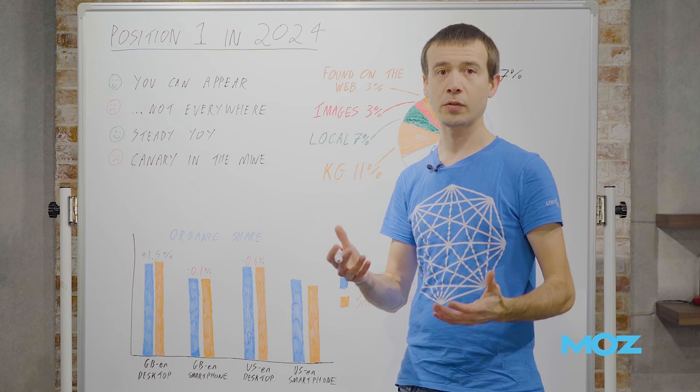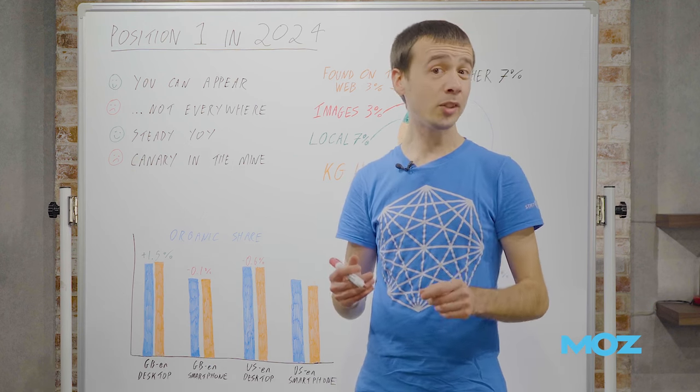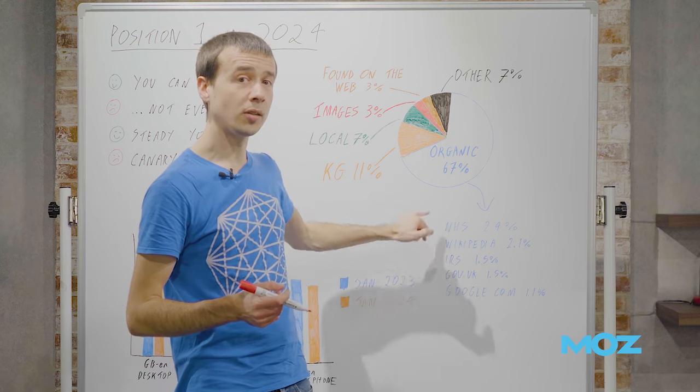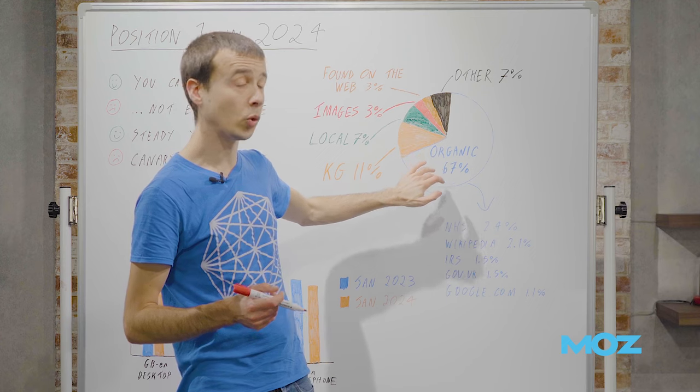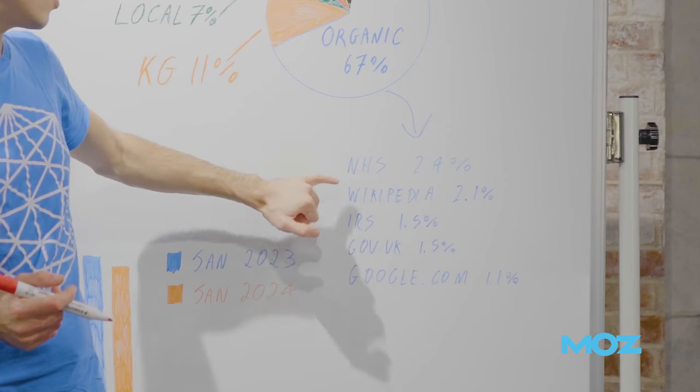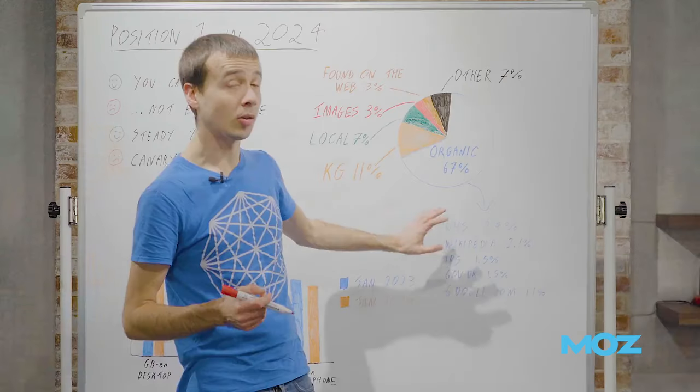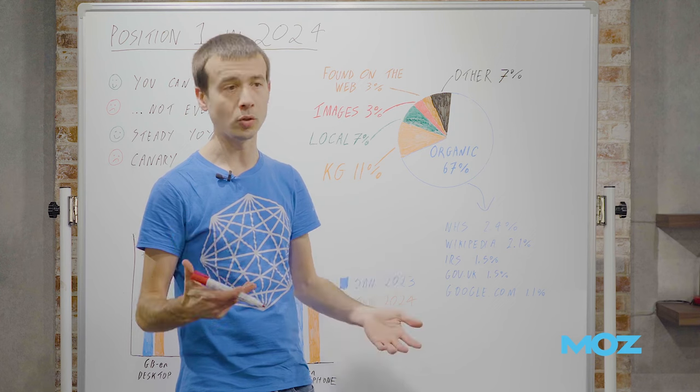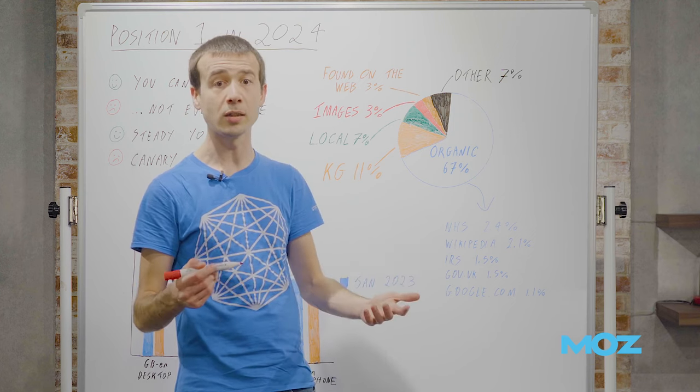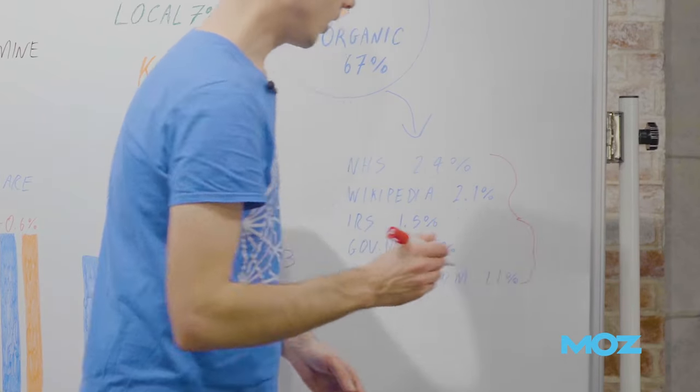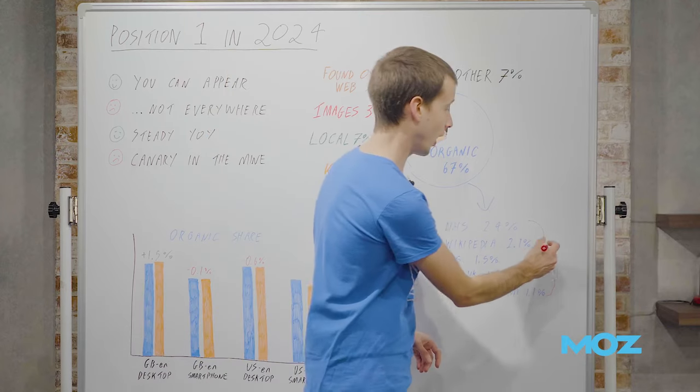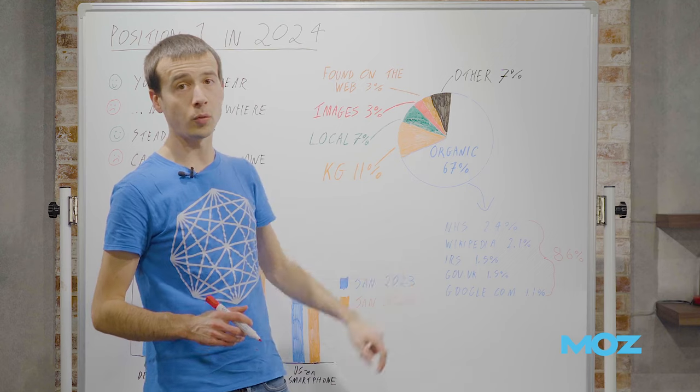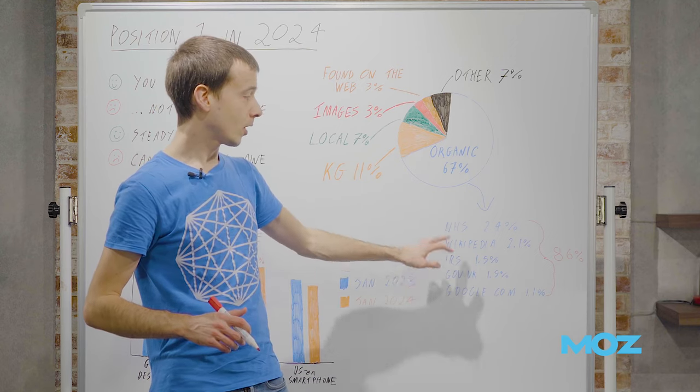What's not so good is that's not universally true. Some features like knowledge graph are not so easy to appear in. Actually, even some of the organic is not in play. These are some of the top sites that appeared in position one: NHS, Wikipedia, IRS, gov.uk—half of these keywords being UK is why you've got NHS and gov.uk—and Google.com, things like Play, Support, or Chrome. These F5 sites alone are 8.6 percent, more than a tenth of what's available.